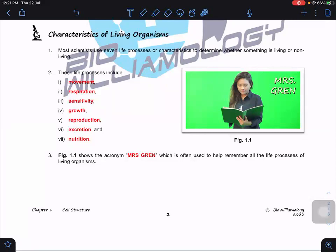First, movement, followed by respiration, sensitivity, growth, reproduction, excretion, and nutrition. If I take the first alphabet of each process, I can form an acronym called MRS GREN. This is how we remember these seven life processes.